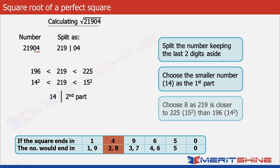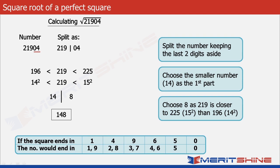Now, since 219 is closer to 225 we will take the larger of the two choices, which in our case is 8. So we can write down our final answer as 148. Please note, had the number been closer to the smaller square 196, then we would have chosen the smaller of the two choices, 2 instead of 8. We will see that in the next example.